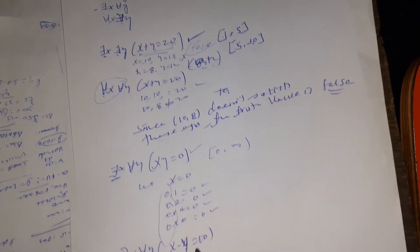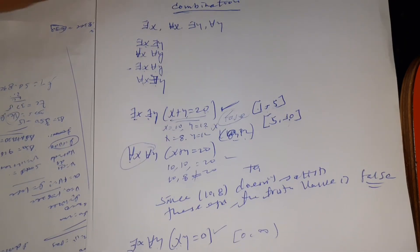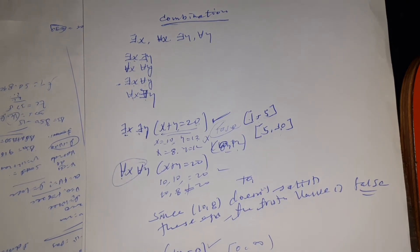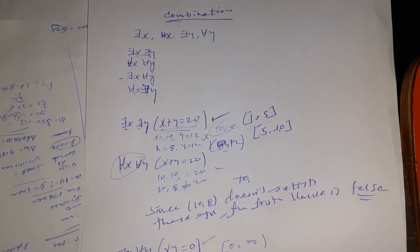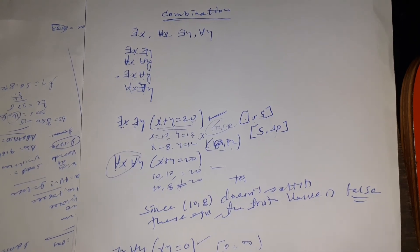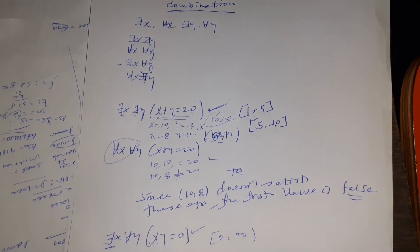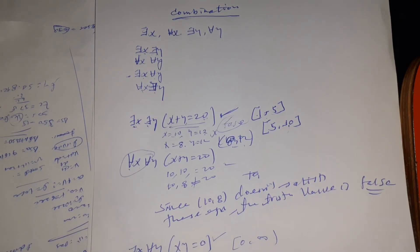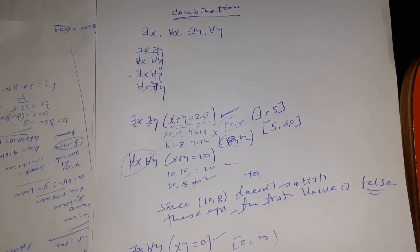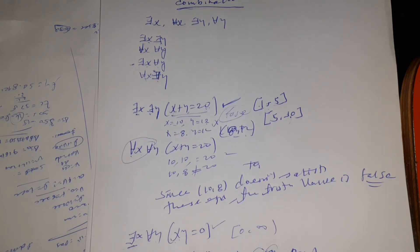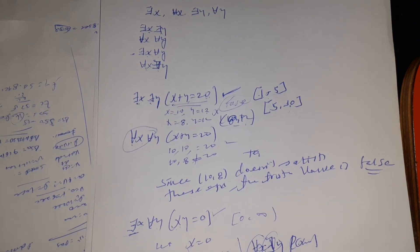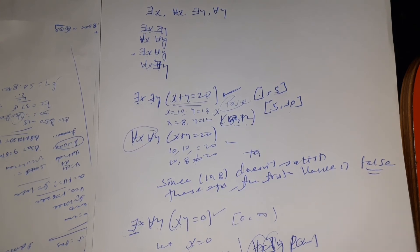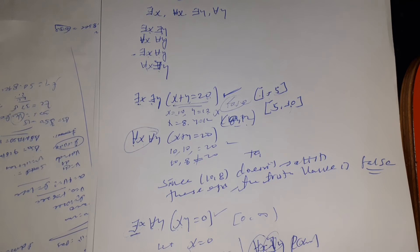Therefore, it is false for the solution. If there are always true values, it is a combination for all x and 0. It is very true for all values where x equals y. For all x there exists y such that x plus y equals zero. We want to solve in terms of y — x plus y equals zero, so y equals negative x.